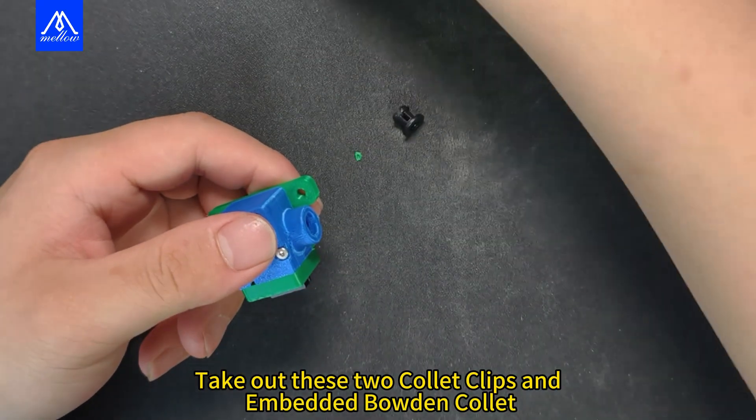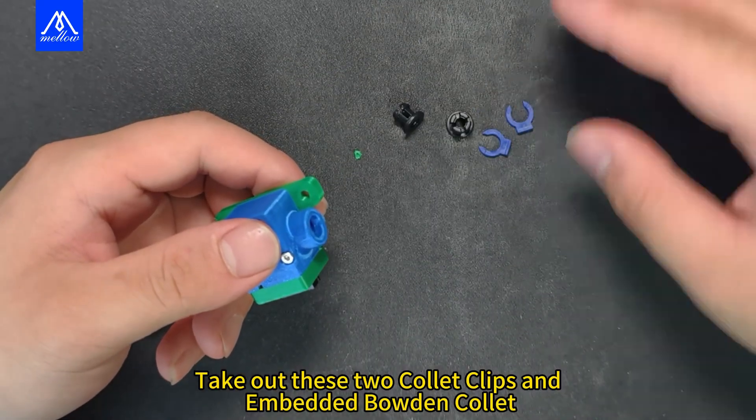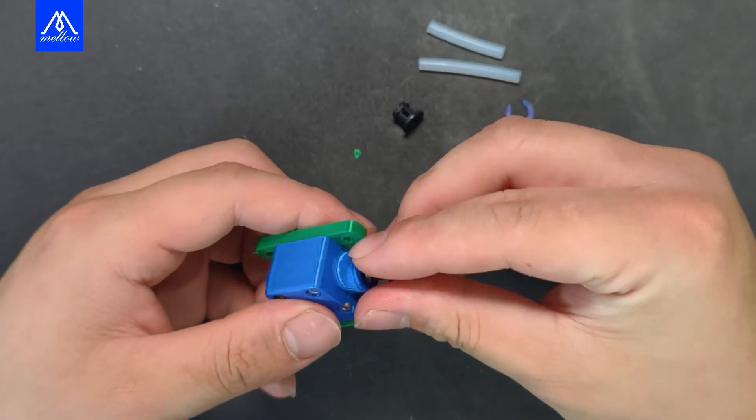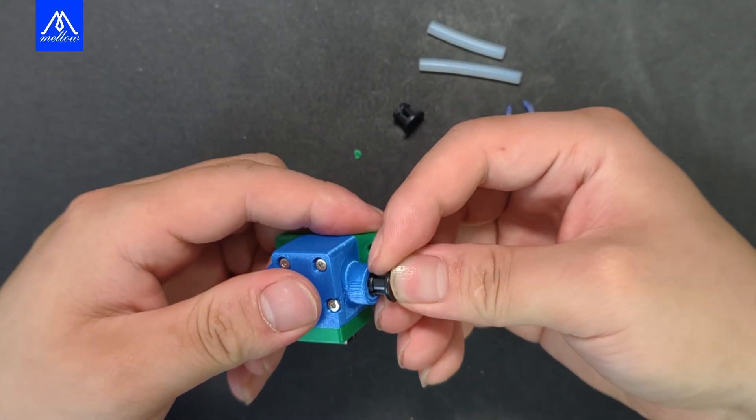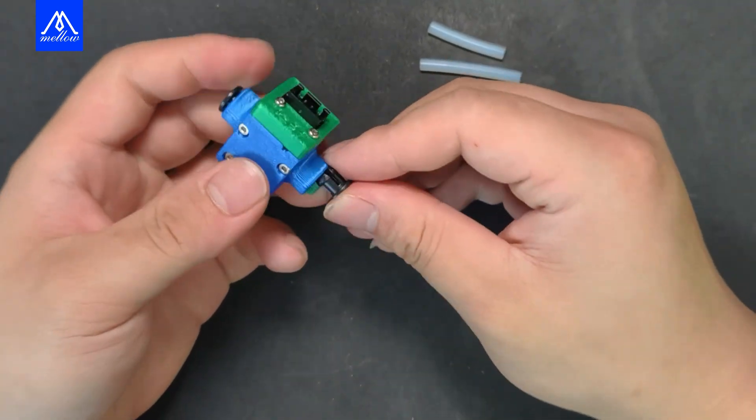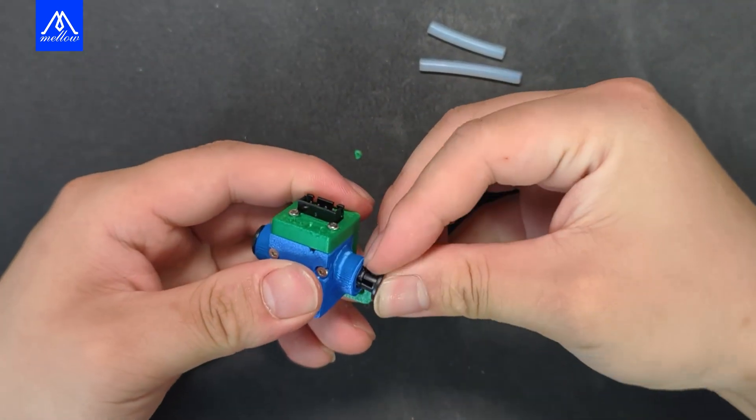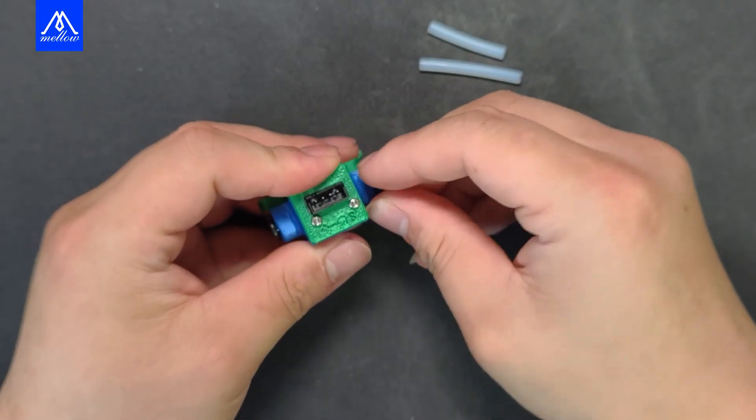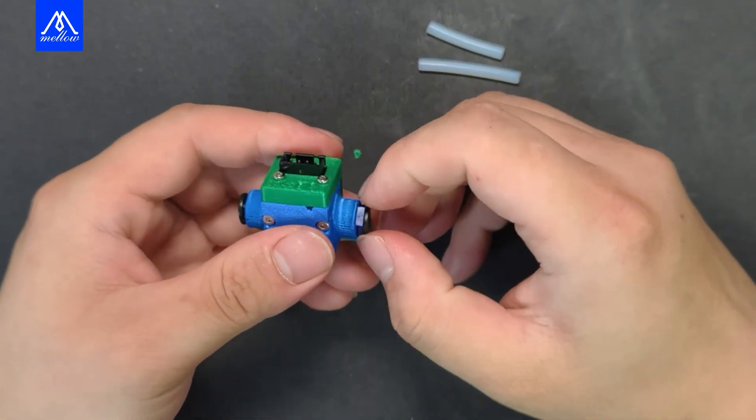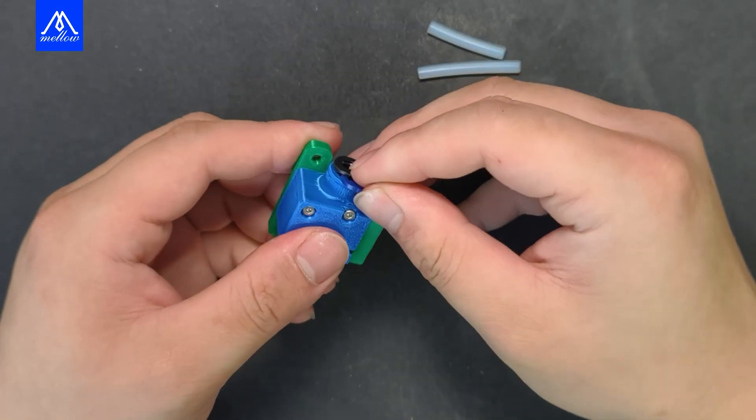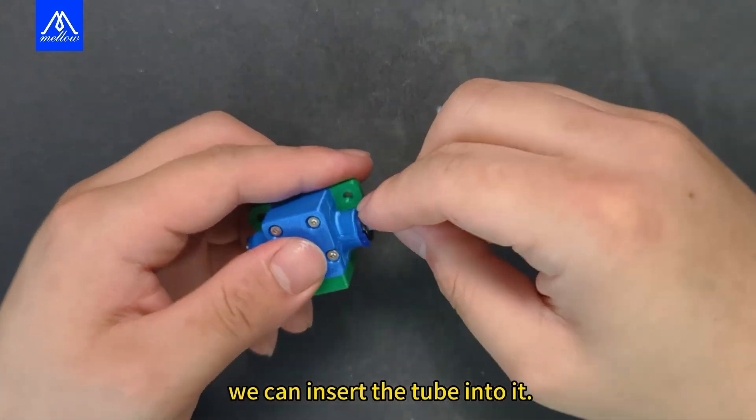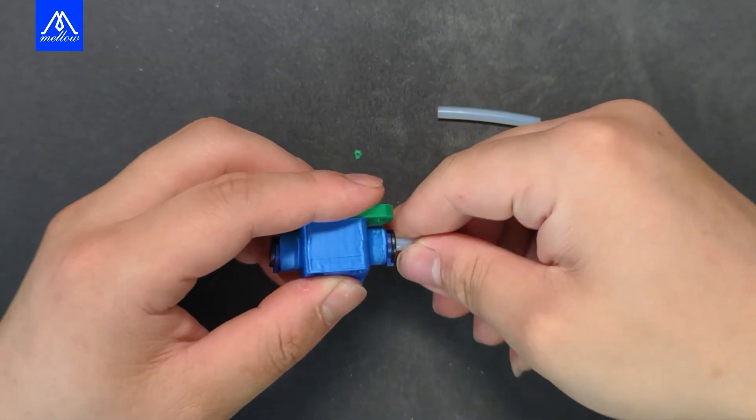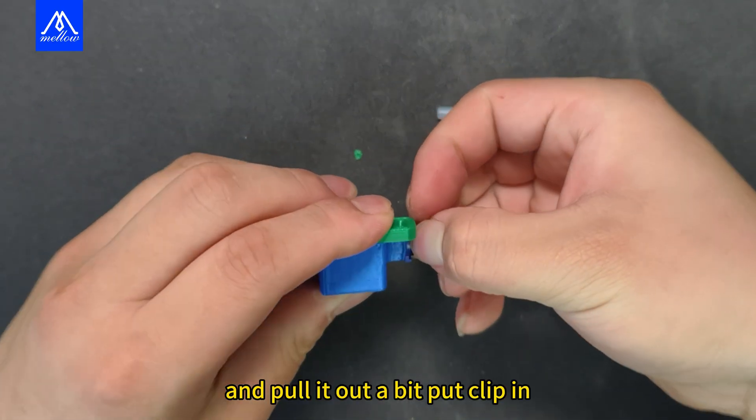Take out these two collet clips and embedded Bowden collet. Then put these two tubes. We can insert the tube into it and pull it out a bit to put the clip in.